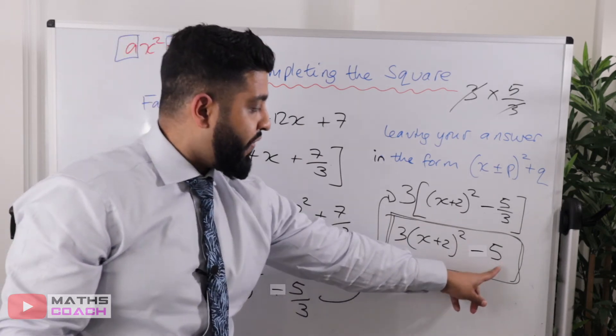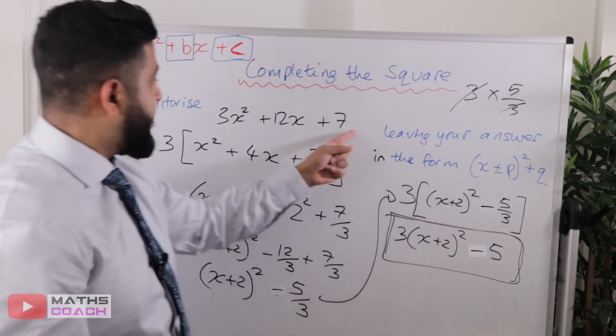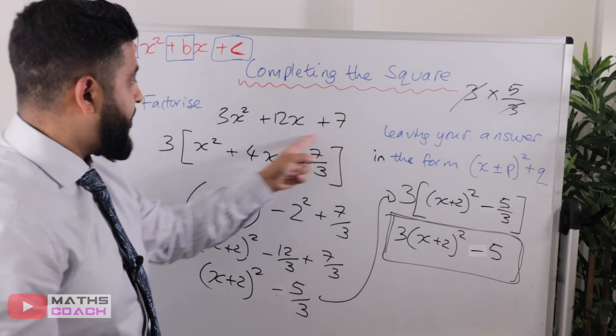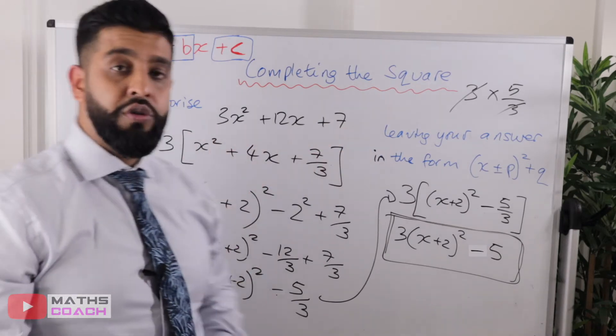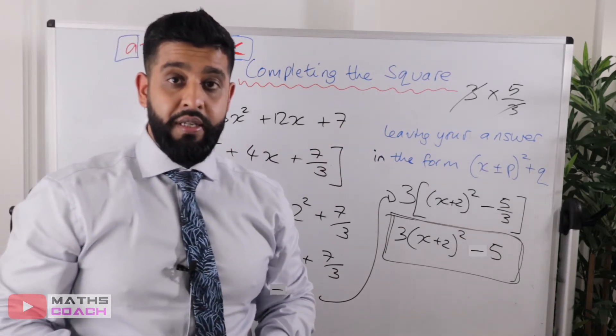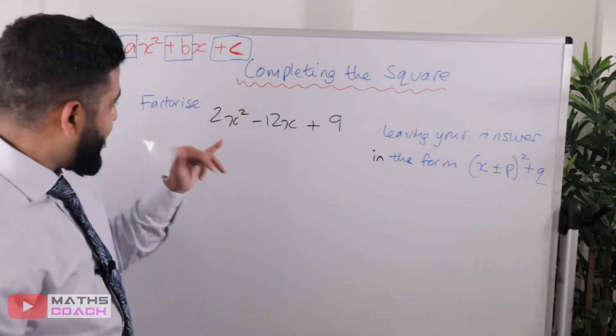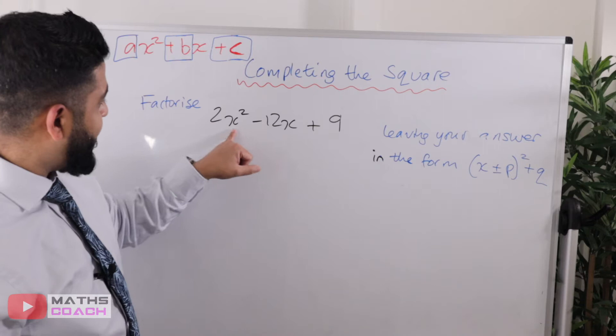So 3 times 5 over 3 is just 5, and that is my final answer: 3 times (x plus 2) squared minus 5. That's 3x squared plus 12x plus 7 factorized using completing the square.